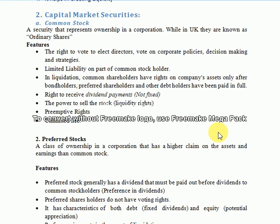Another feature of common stocks is uncertain returns. There is uncertainty in the returns of stock investments because the value depends on many factors, such as company earnings, taxes, industry factors, the position of the industry, and macroeconomic factors. Therefore, returns on the stock market are uncertain.